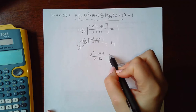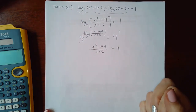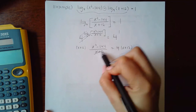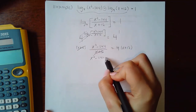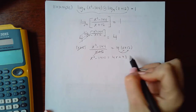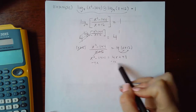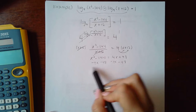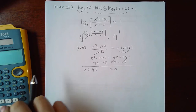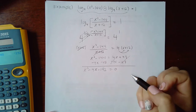4 to the 1 power is just 4. To solve equations with fractions, you multiply by the common denominator, so I get x squared minus 144 equal to 4x plus 48. This is a quadratic, so I need to get it equal to zero, giving me x squared minus 4x minus 192.